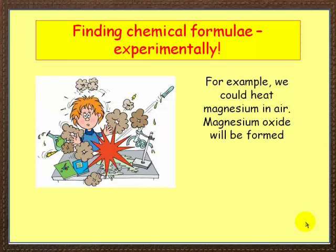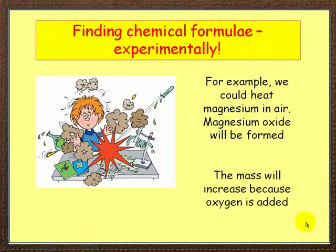For example, we could heat magnesium in air. Magnesium oxide would be formed, and of course the mass would increase because oxygen is being added. So we may get the following results table.